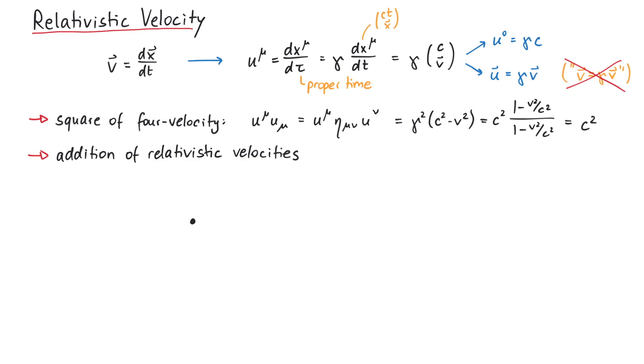Imagine that some particle travels with the 4 velocity u1. We now look at this particle from another reference frame, such that the frame with the particle moves along the x-axis to the right with v2.